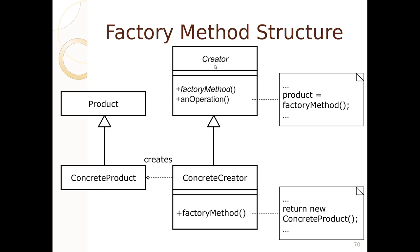Here's the general structure of the factory method. We've got a creator class, like a factory or a pizza store. It's got a factory method. It has a useful operation — inside of an operation, we make the product with the factory method. We have a general idea of what the product is — in our case, it was pizza. The concrete product will be like New York style veggie pizza, and it will be built by a concrete creator such as New York style.